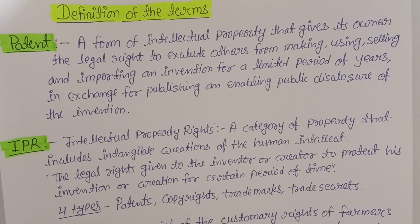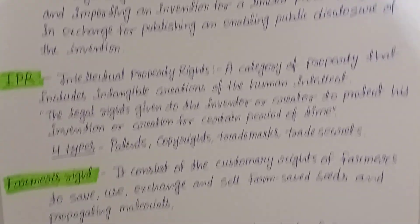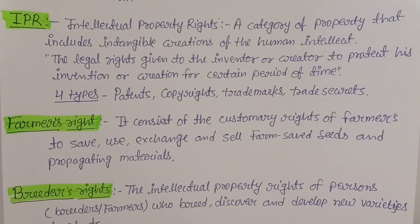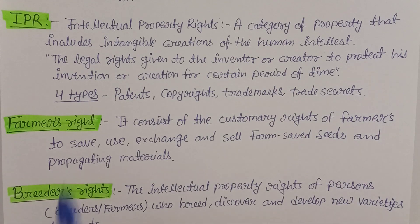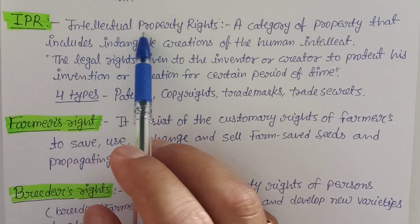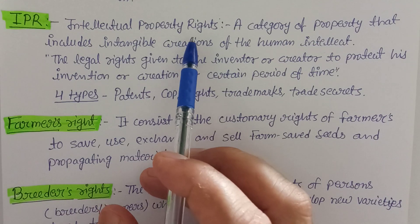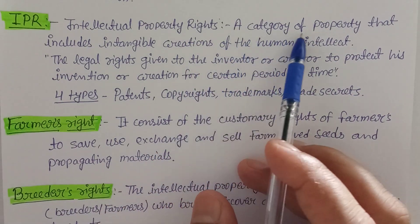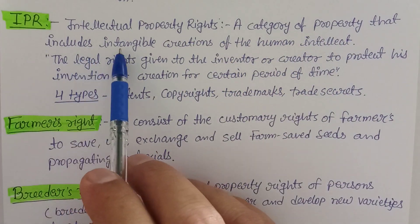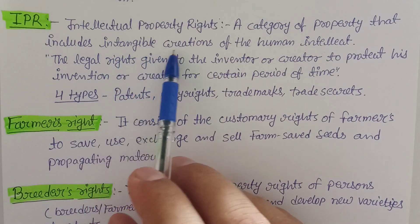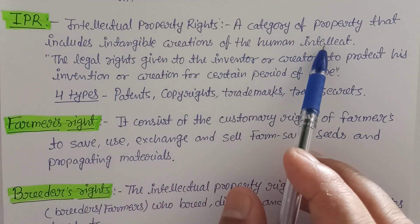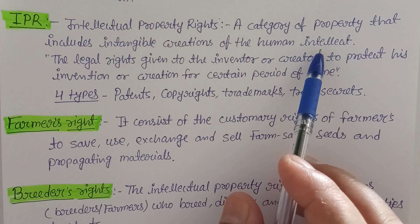Here we are discussing only the definitions — understanding the terms, not describing procedures. That is given in your syllabus. The second term is IPR — Intellectual Property Rights. It is a category of property that includes the intangible creations of human intellect. Somebody can have IPR rights, and they can file a patent, which also comes under IPR.